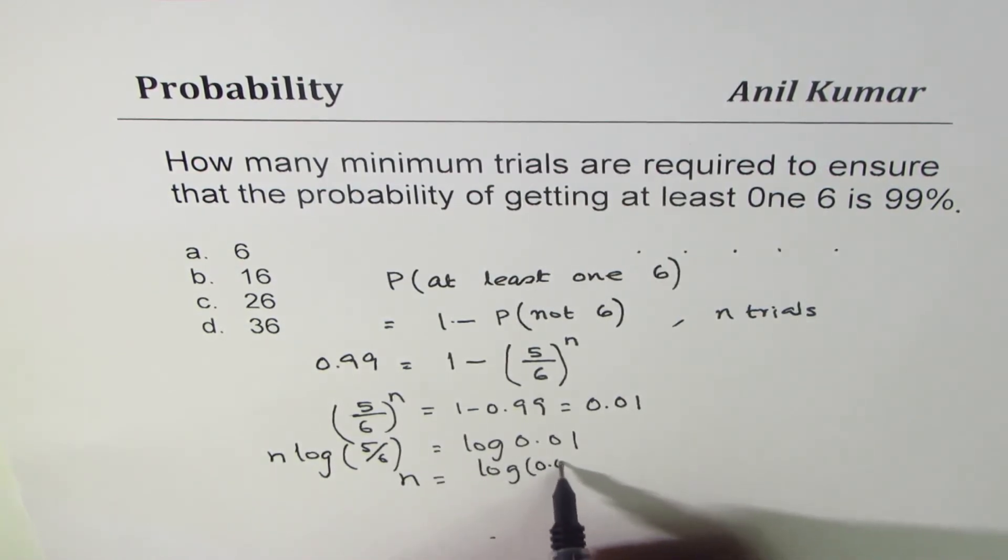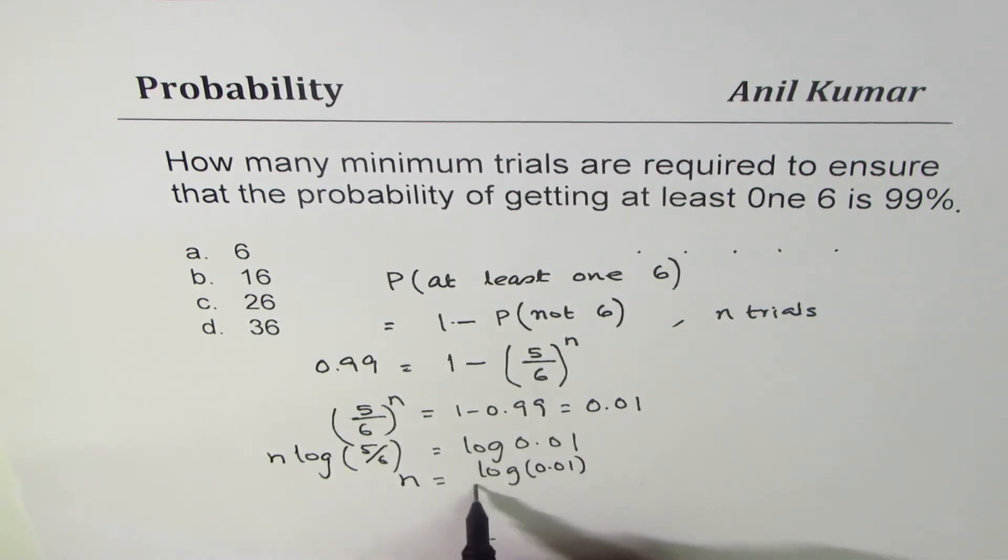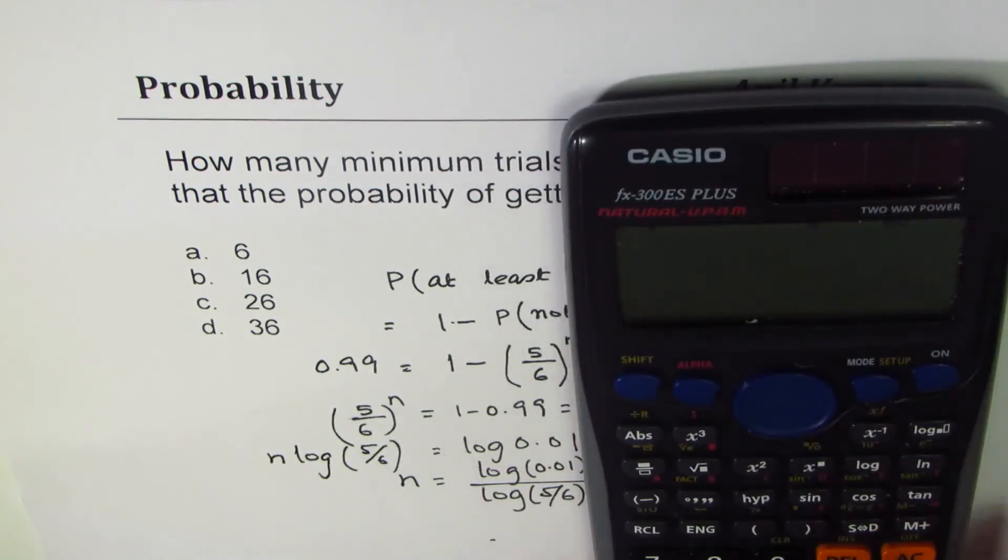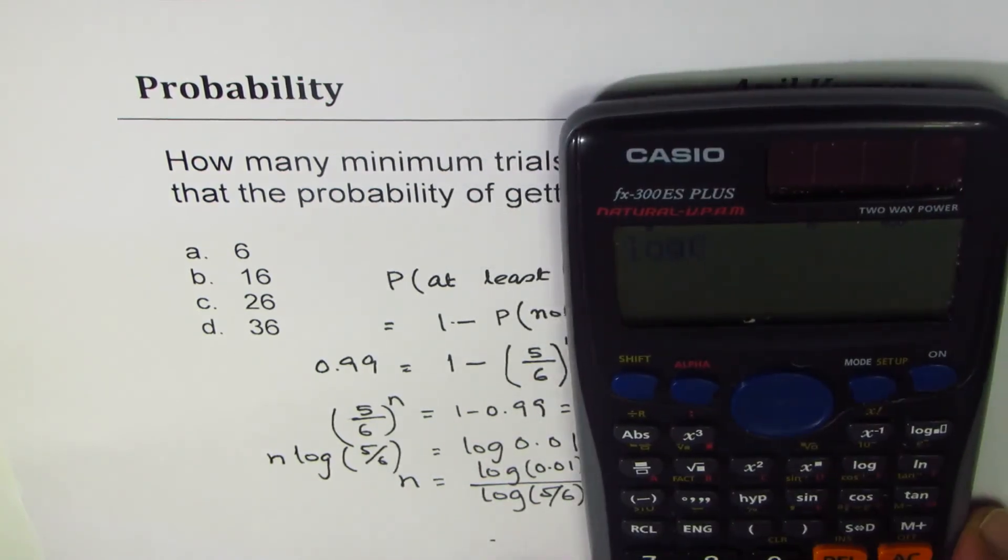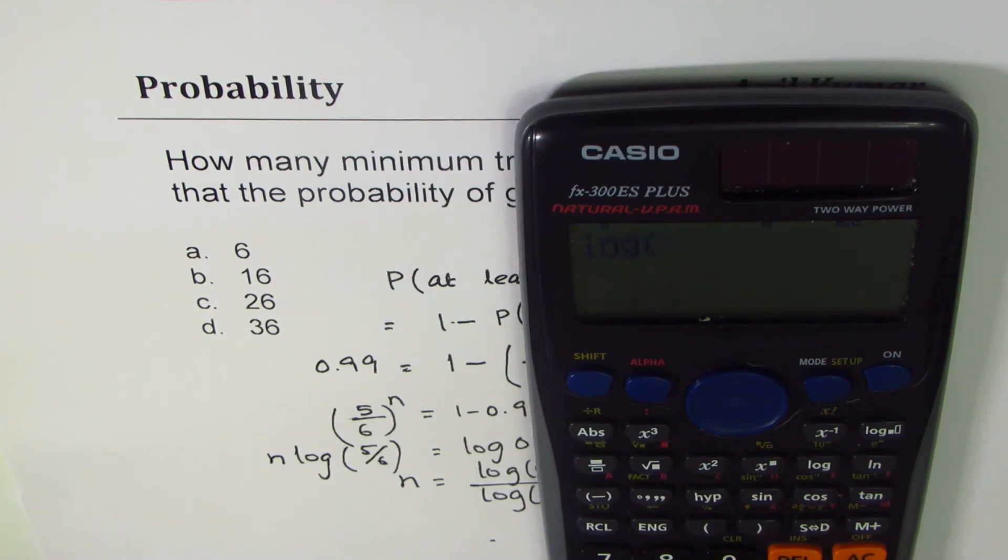So now you can use the calculator to find this answer. Let's use the calculator. You could use log or ln. So log of 0.01 divided by log of...